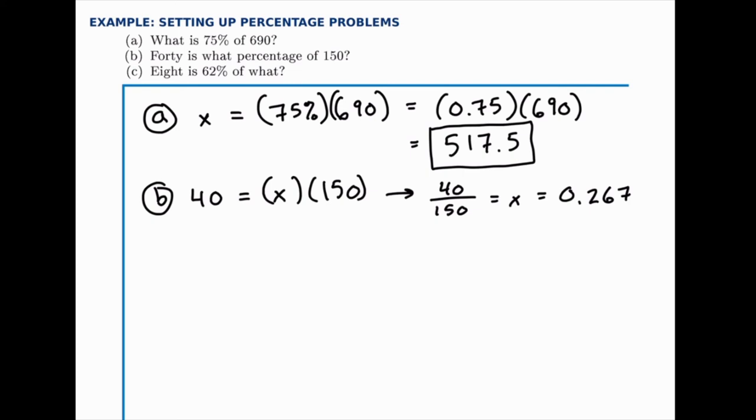So, rather than giving the answer in decimal form, we really should give it as a percentage, since that's how the question was asked. So, we'll say x equals 26.7%. So, the answer to Part B is that 40 is 26.7% of 150.